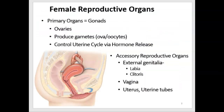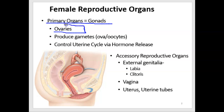Let's start by looking at the organs that are part of the reproductive system in females. The primary organ, just like in males, is the gonad, and there are two of them. Bilaterally, we have ovaries in the abdominal pelvic cavity, right and left. These ovaries produce gametes, just like in males. The gametes in females are called ova, or oocytes.